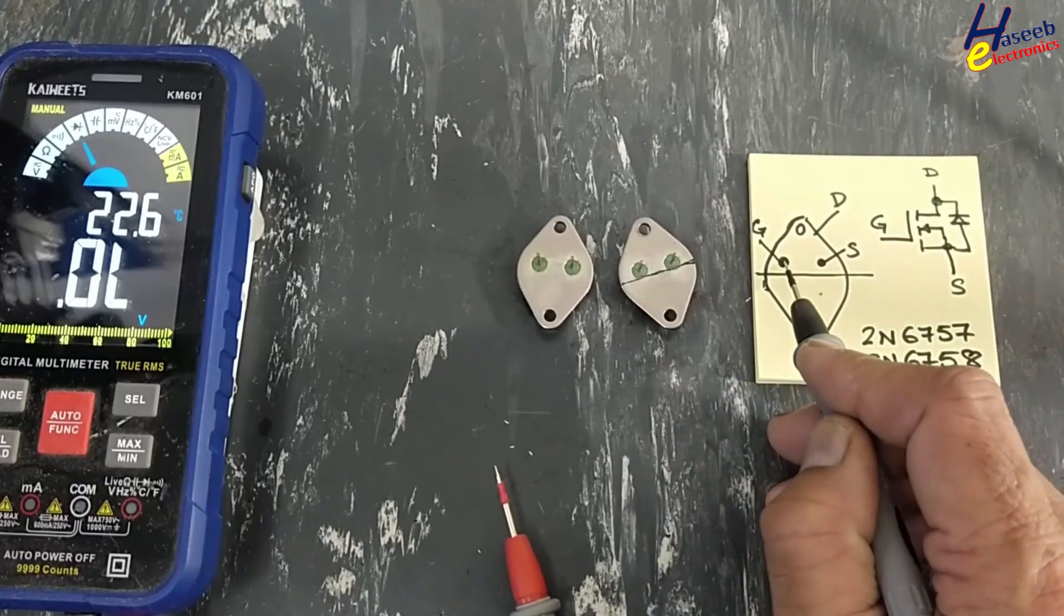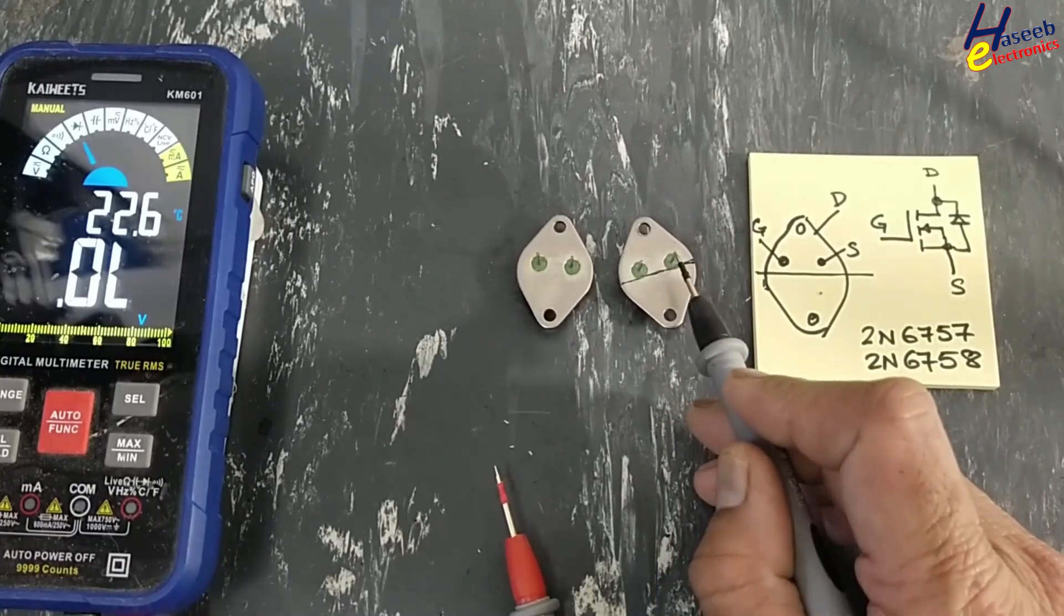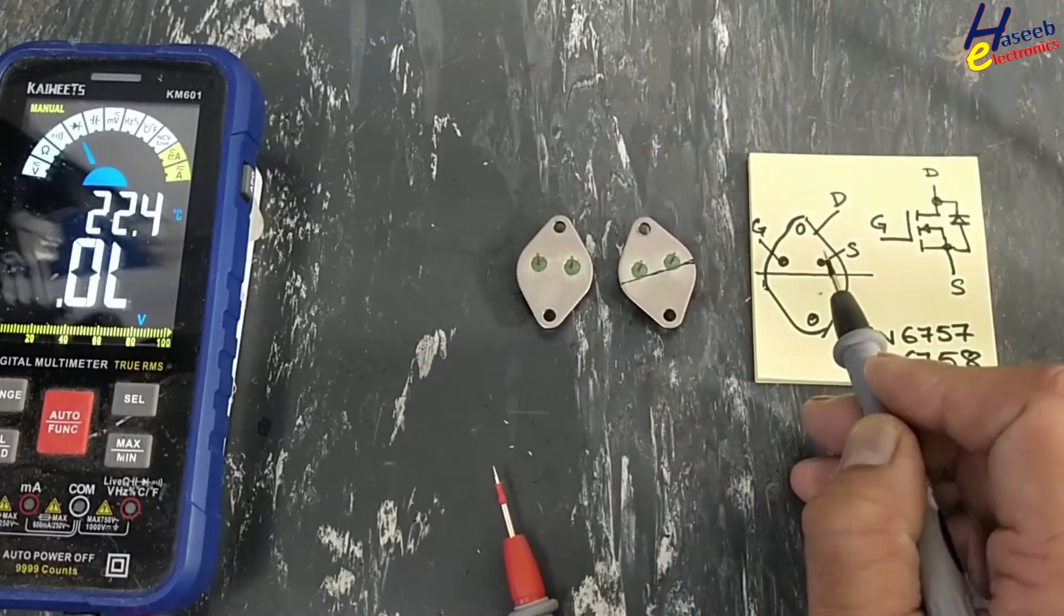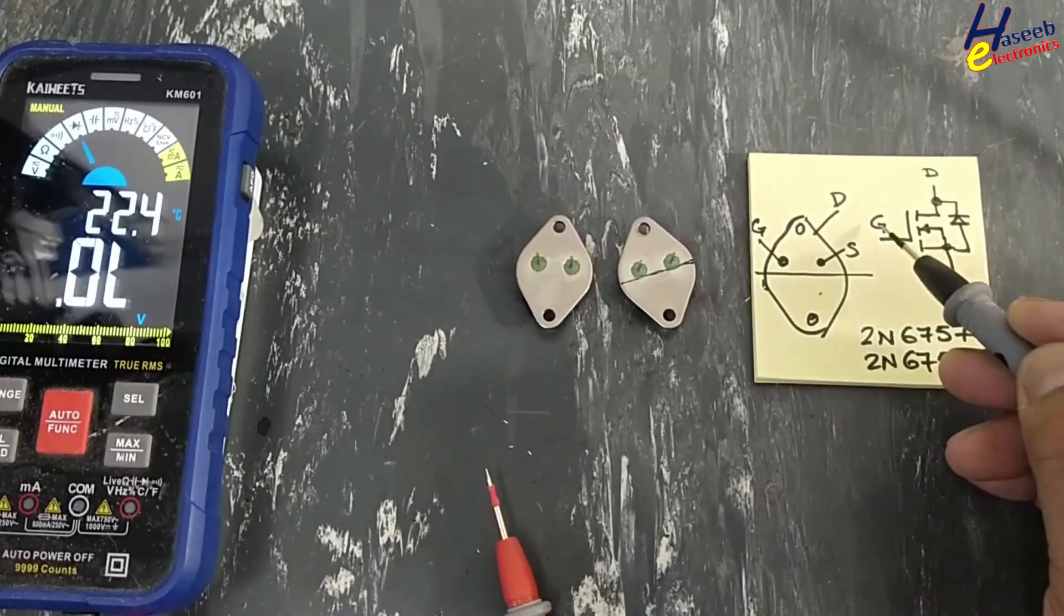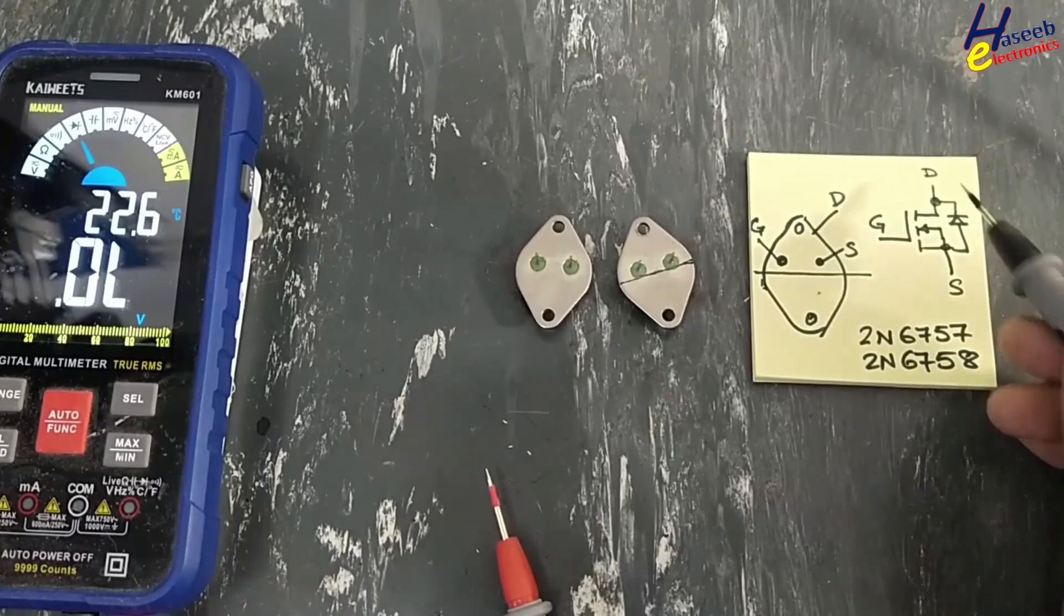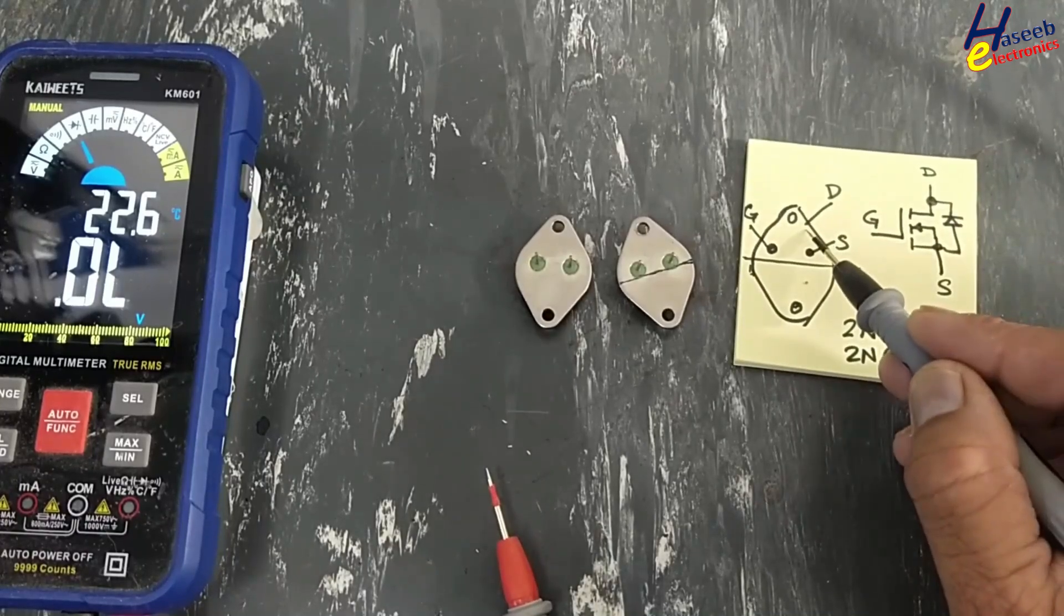Pin 1 is gate, this pin is source, and the metal body is drain. So we have gate, drain, source - the drain is connected to the body.